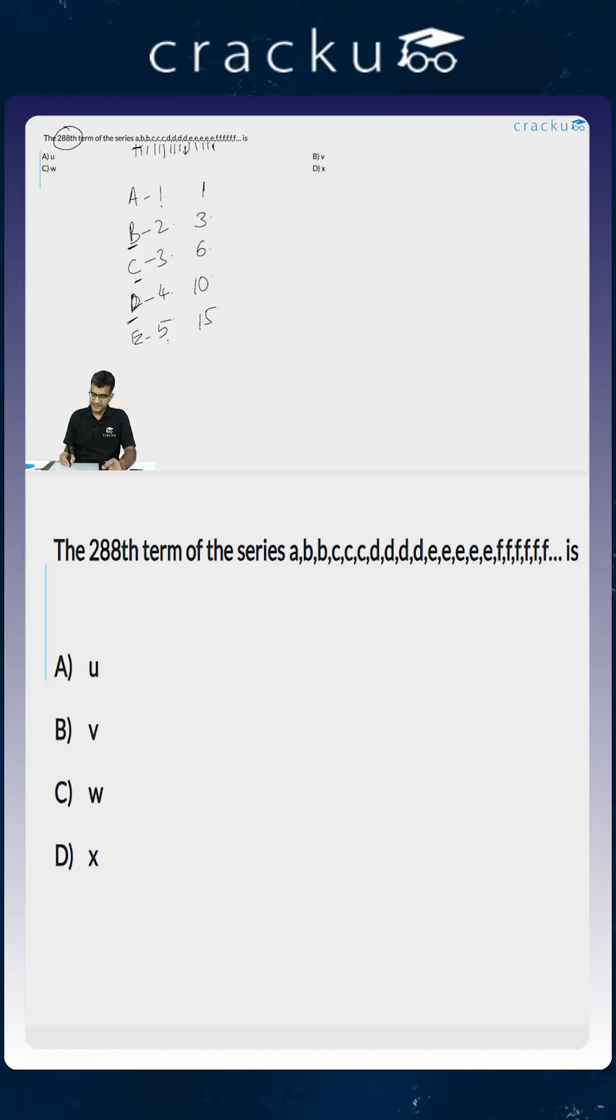Now if there is a letter, say alpha, which is the 288th term, and if alpha is the nth letter in the English alphabet, then n into n plus 1 by 2 will be greater than or equal to 288, and n is the smallest such number. Why is that the case?